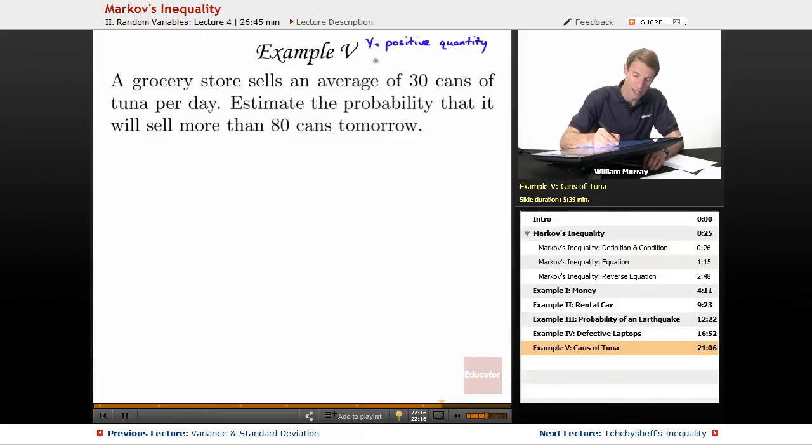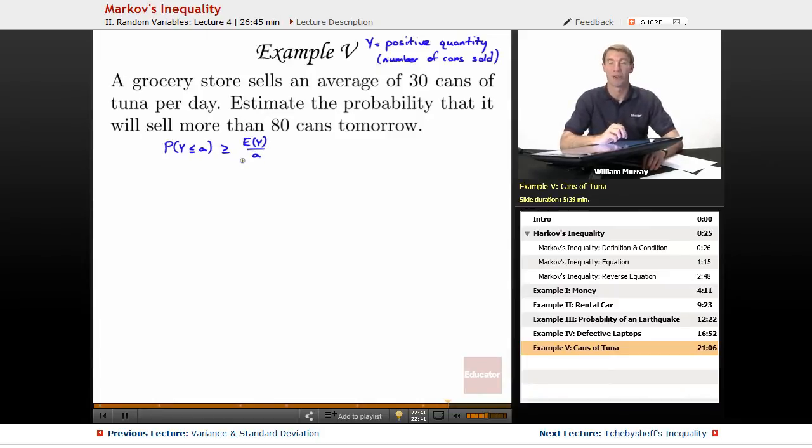Our y here is the number of cans of tuna sold each day. And let's write down our Markov's inequality, the probability that y is less than or equal to a, is greater than or equal to E(y) divided by a. That's just our generic formula for Markov's inequality, we learned that back on the first slide of this lecture.